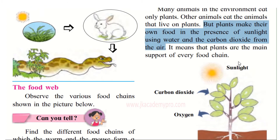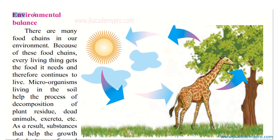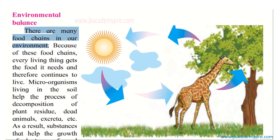With the help of sunlight, carbon dioxide, water, and nutrients, plants are able to make their own food, and in doing so they give out oxygen. This means plants are the main support of every food chain — all types of plants, trees, and grass form the main source. Therefore it is very necessary that we protect our environment.